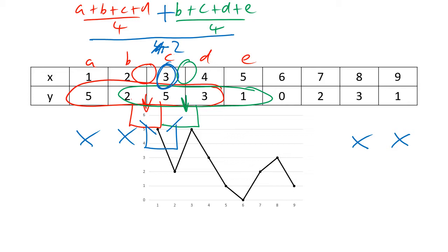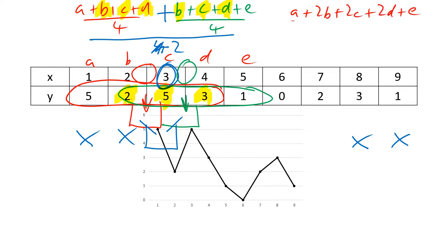Last time we repeated b twice because it was in both the red loop and the green loop. But this time b, c, and d are all repeated — there's b, c, and d in the first loop, and b, c, and d again in the second loop. So we've got two lots of b, two lots of c, and two lots of d, because b, c, and d — the middle values — are inside both loops. So we're going to combine all of that into one formula.